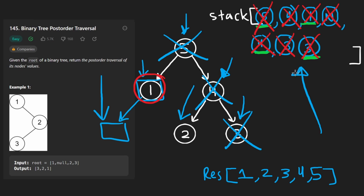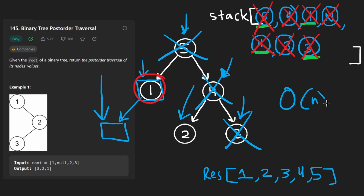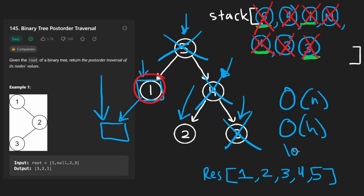That's why post-order is harder than pre-order and in-order traversal iteratively — for those, you don't need to keep track of which nodes have already been visited. You don't need to visit the same node multiple times. But overall, the time complexity is still O(N). The stack space is going to be the height of the tree, which if balanced is O(log N), and if not balanced, it's O(N).